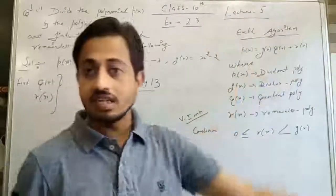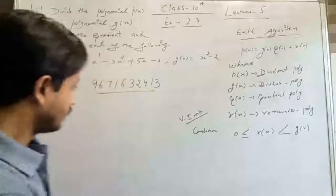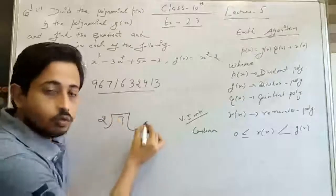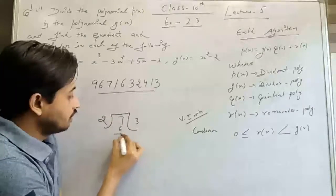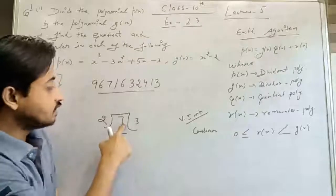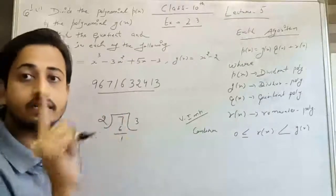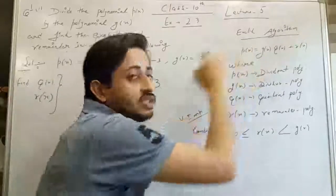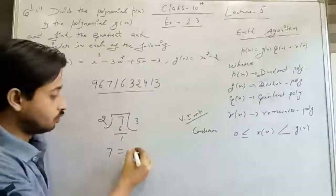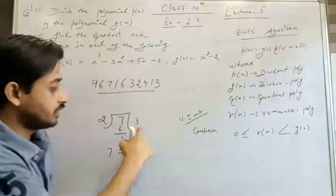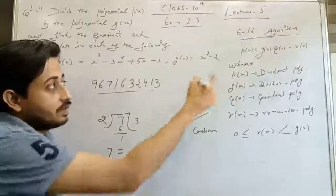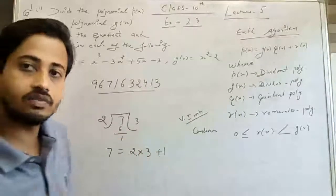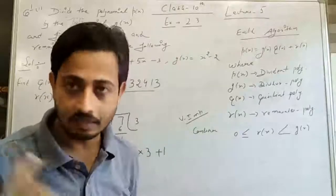So how do we get this relation? If I have the number 7 and I divide it by 2: 2 times 3 is 6, and I get a remainder of 1. So 7 is your dividend, 2 is your divisor (which corresponds to G(x)), 3 is your quotient, and 1 is your remainder. This is the method to represent our dividend in terms of quotient, divisor, and remainder.